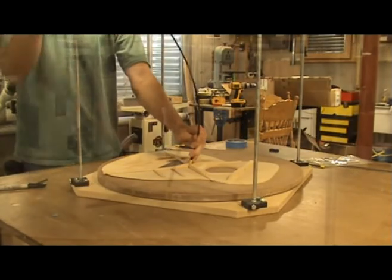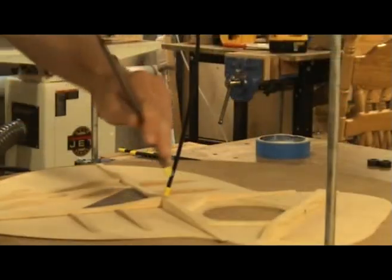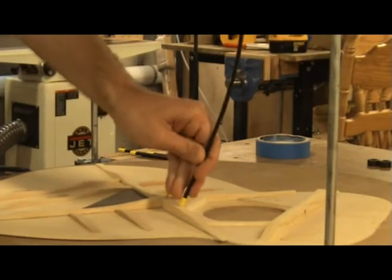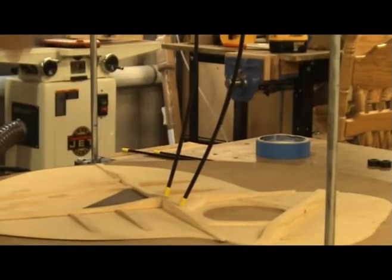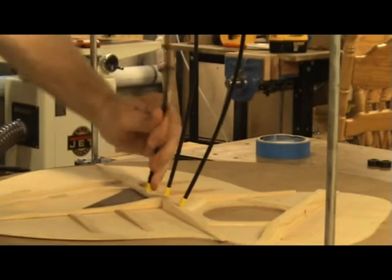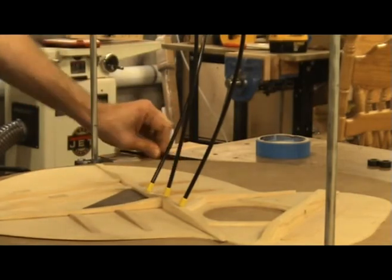I then placed some of the rubber tipped flexible go bars on the braces to check the tension. You can adjust the amount of tension applied by the rods by simply moving the stops on the metal rods up or down.